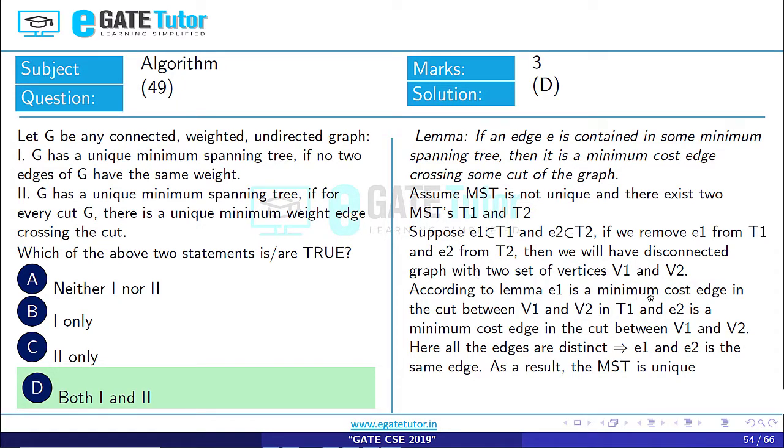That means E1 and E2, the minimum cost edges that we assumed, are unique. If both are unique, then E1 and E2 is the same edge. Hence, as a result, the MST is unique. So both statement first and second are true. Option D is correct. I'll see you next time.